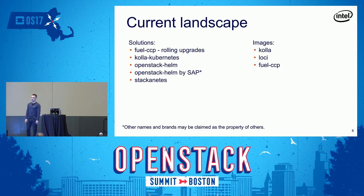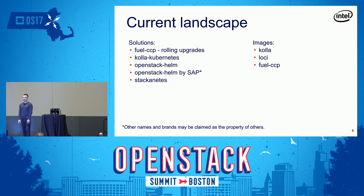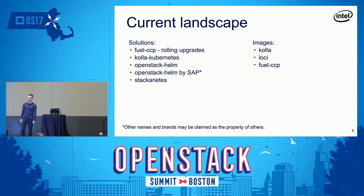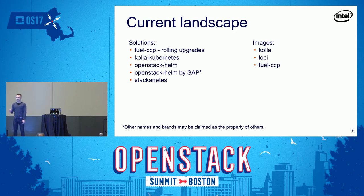What has changed over the last year is that the ecosystem is much richer. We have multiple solutions. One of them is FuelCCP, which is the only one offering full rolling upgrades — you can migrate from Newton to Mitaka without downtime on the data plane and with very small downtime on the control plane. There is also Kola Kubernetes, two OpenStack Helm projects — one vendor-driven by SAP — and Staconetis.